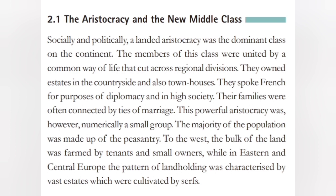Section 2.1: The Aristocracy and the New Middle Class. Socially and politically, a landed aristocracy was the dominant class on the continent. The members of this class were united by a common way of life that cut across regional divisions. They owned estates in the countryside and also townhouses; they spoke French for purposes of diplomacy and in high society. This powerful aristocracy was, however, numerically a small group. The majority of the population was made up of the peasantry. In eastern and central Europe, the pattern of land holding was characterized by vast estates cultivated by serfs.